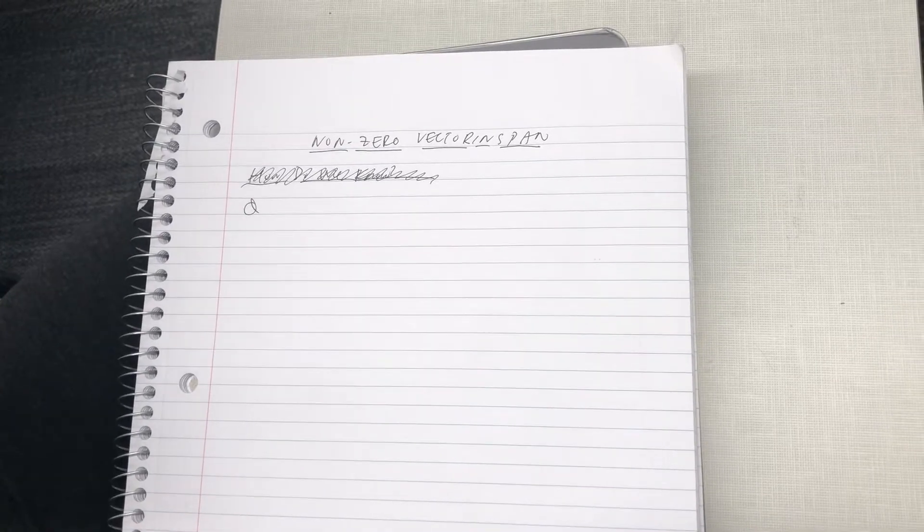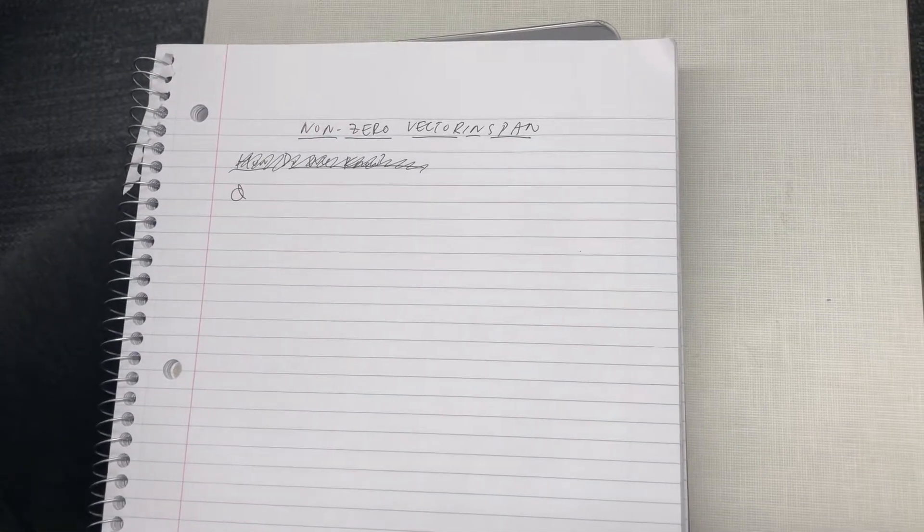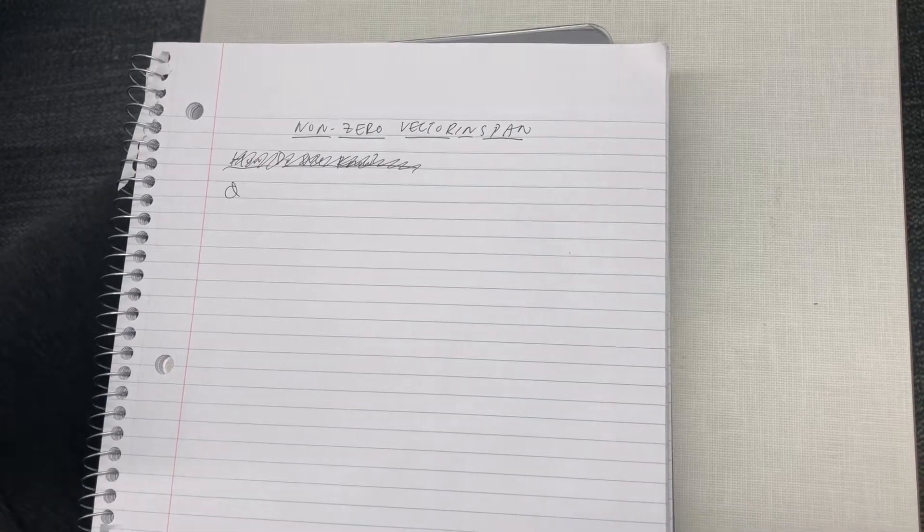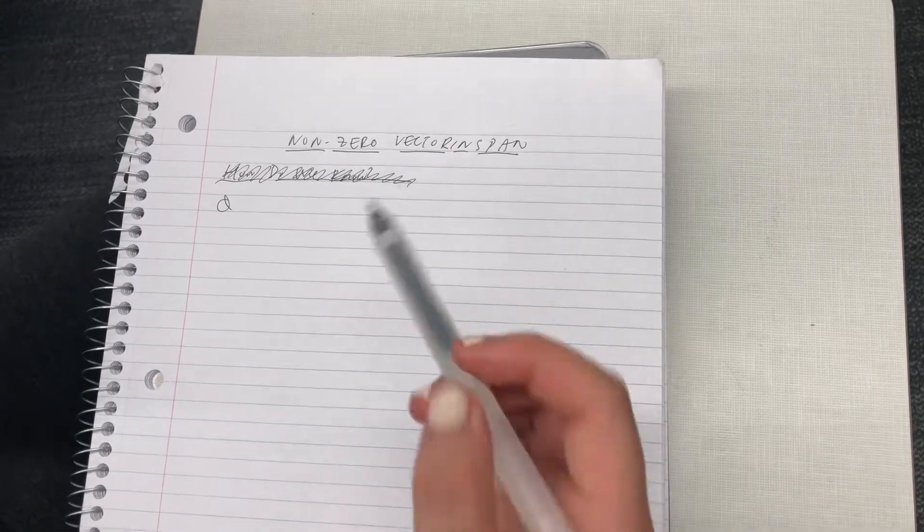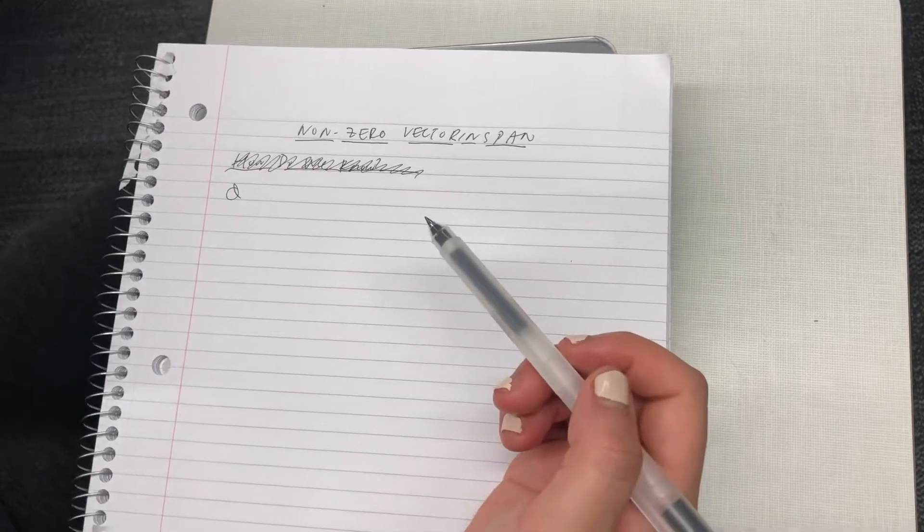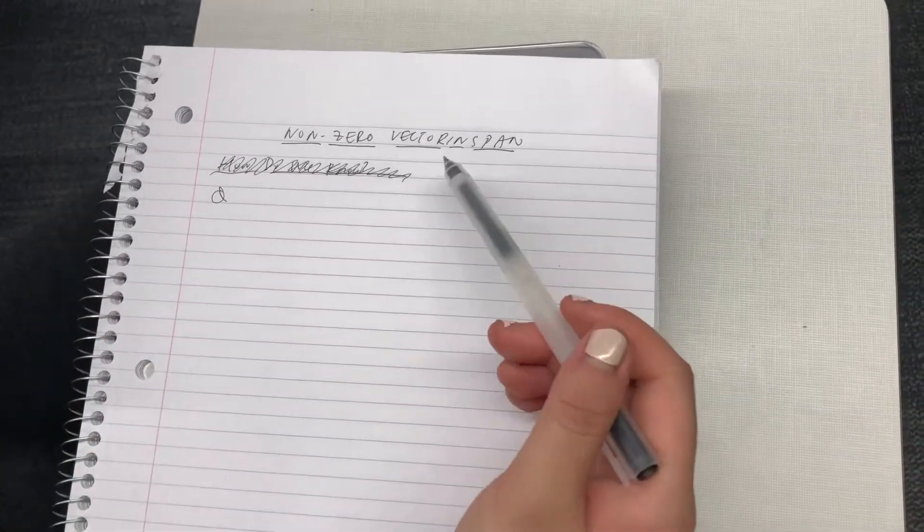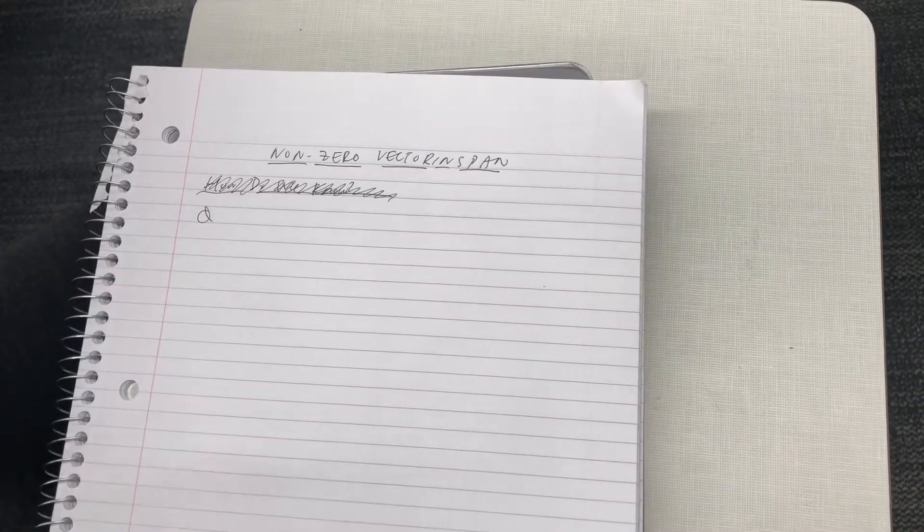So if there's a vector in a span, that means a reduced row echelon form creates a system where it creates coefficients that will multiply together to get the original vectors to get the vector that you're looking for.